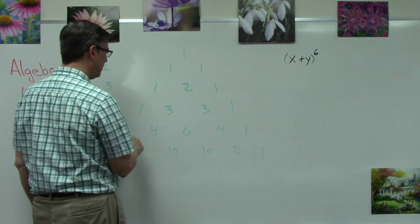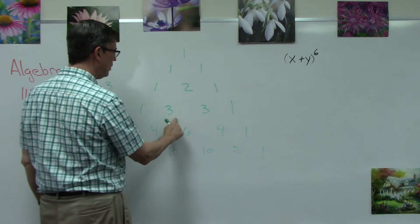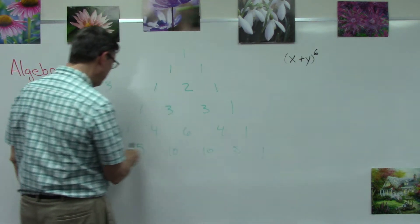Bring the one down. We add one plus three to get four, three plus three is six, three plus one is four. All of this is shown in the page. What if we're trying to figure out what row seven would look like?